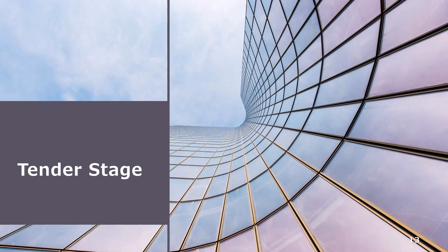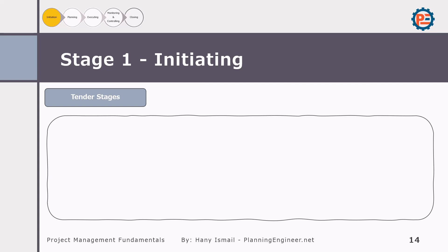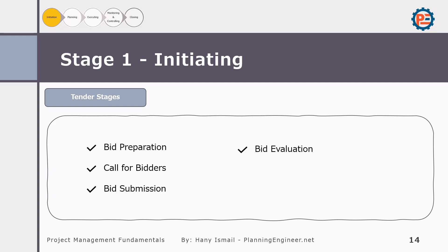After the design is approved, the project moves into the tender stage. This is where the project is put out for bidding. The tender stage includes several key steps: bid preparation, call for bidders, bid submission, bid evaluation, award of contract, and contract signing. During bid preparation, the client prepares the documents to share with contractors in order for them to bid on the project.